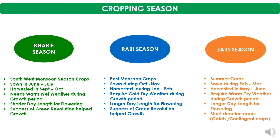The third season is Zaid season, where crops are summer crops in nature. The sowing season is from February to March months and harvesting from May to June. These crops generally pass through the summer season, so they are also called summer crops.